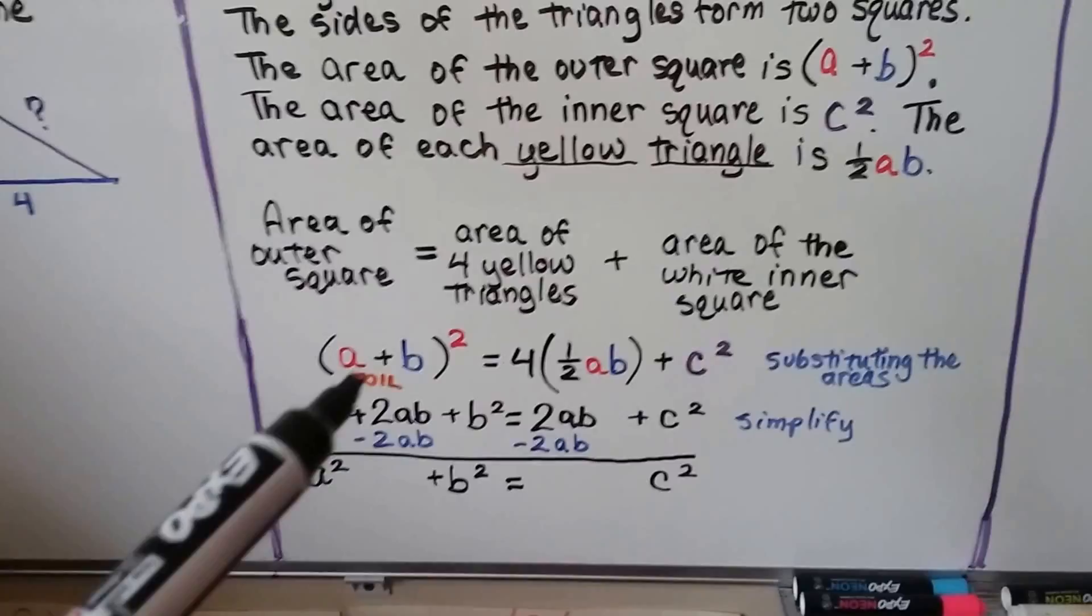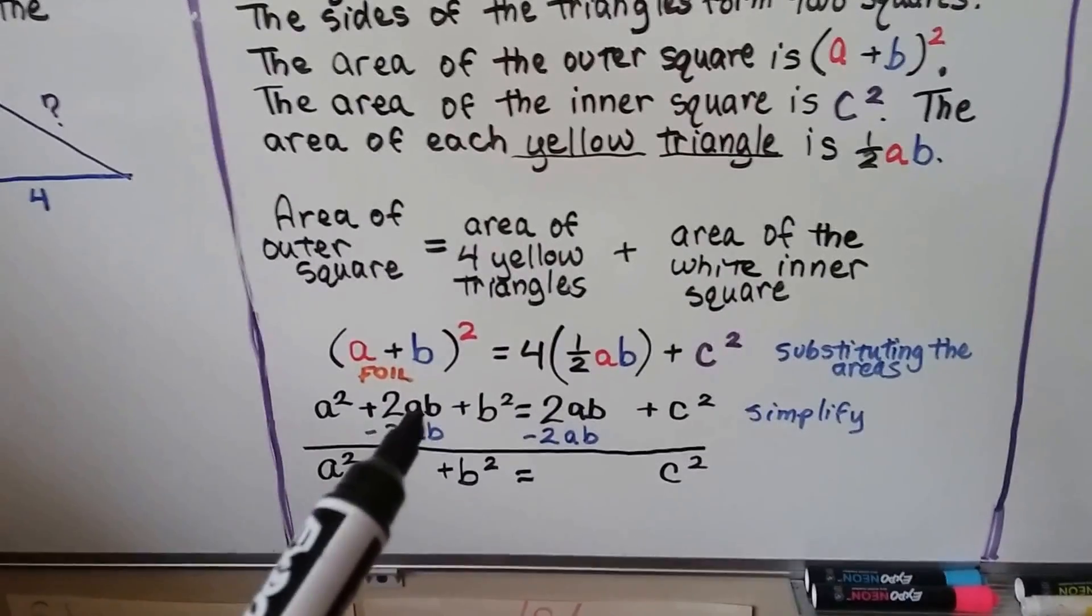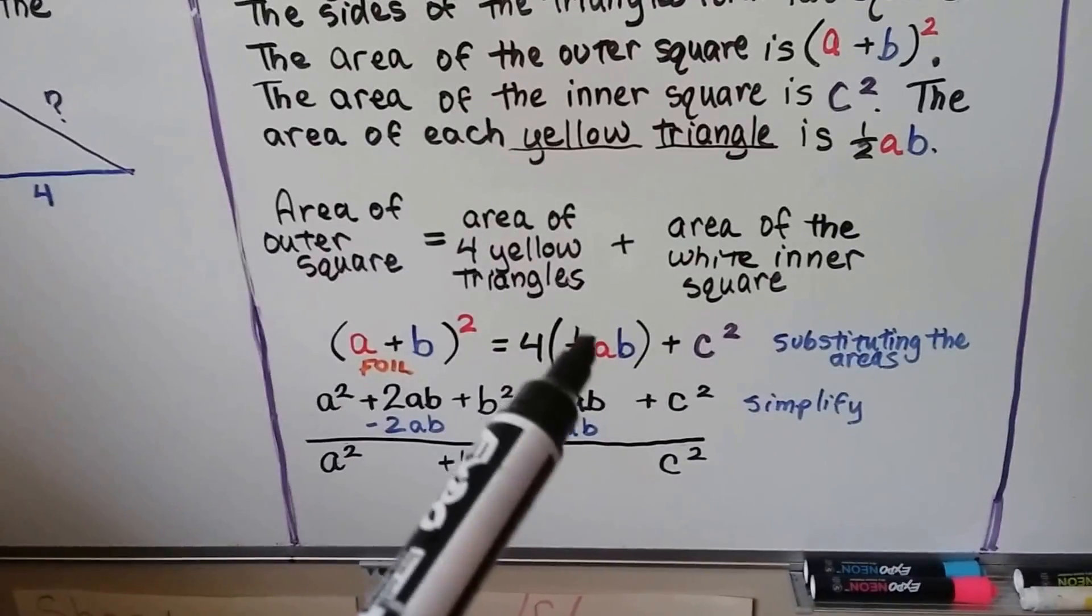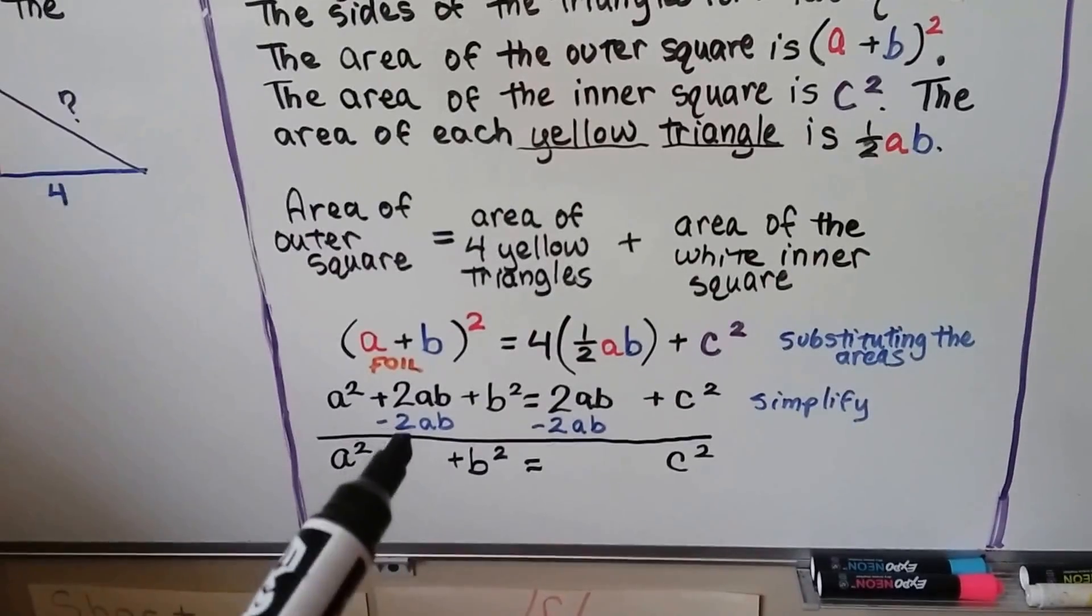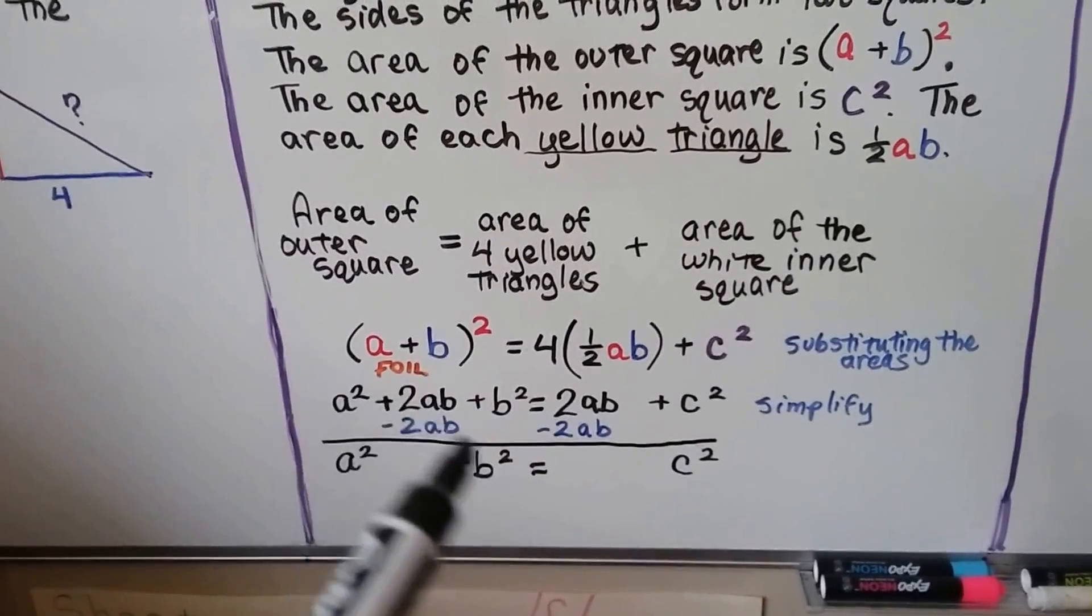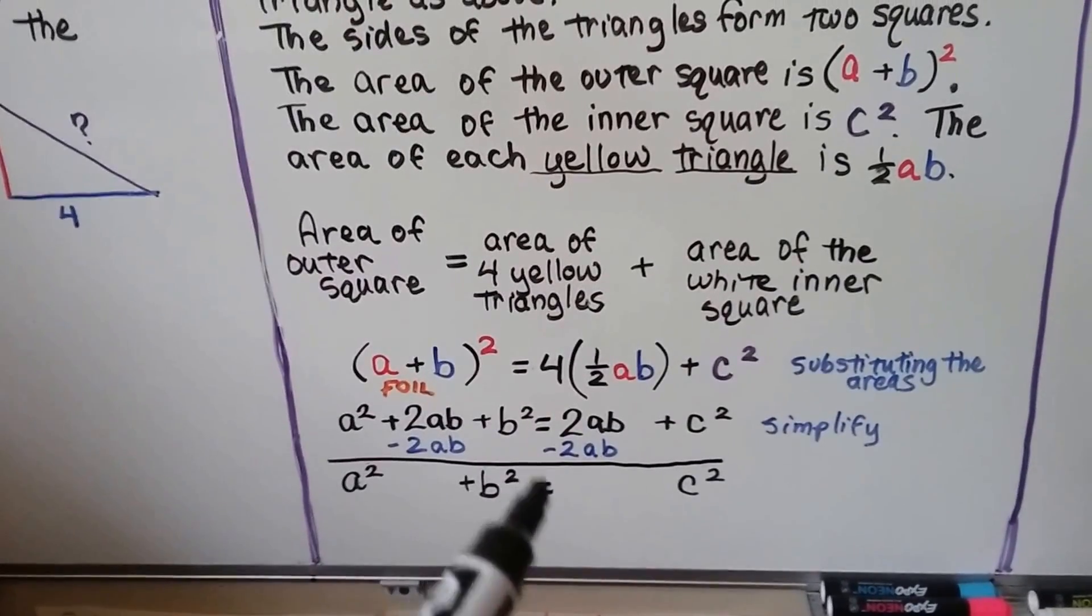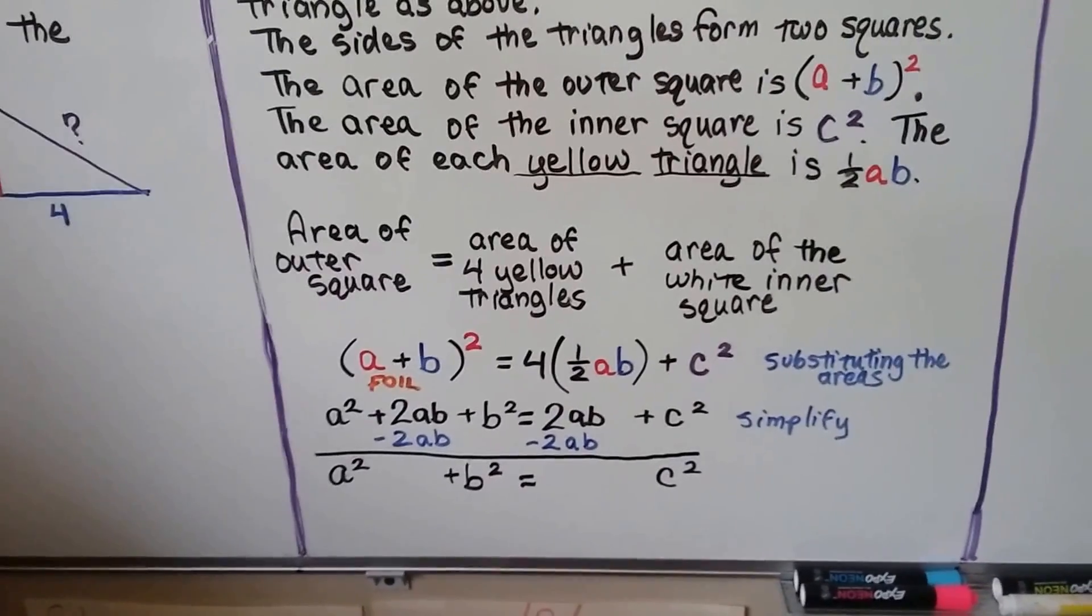This a plus b squared, we FOIL it. Remember, first outer inner last. And we get a squared plus 2ab plus b squared. And it's going to equal four times half ab, which is 2ab. And we bring down our c squared. And we can simplify this by subtracting 2ab from each side of the equation. And it eliminates them. And we get a squared plus b squared equals c squared. So we've proved the Pythagorean theorem with area and algebra.